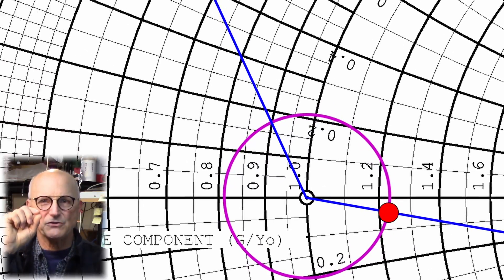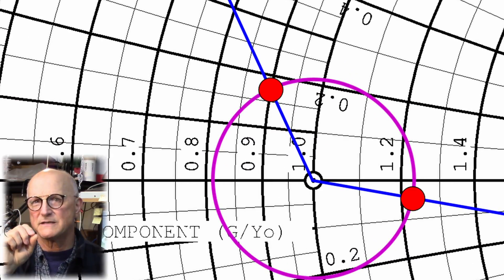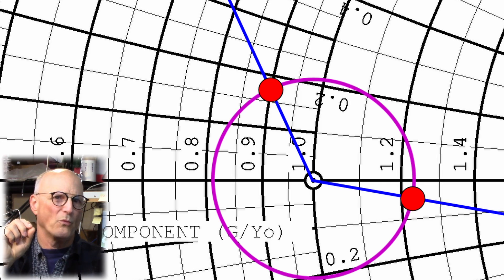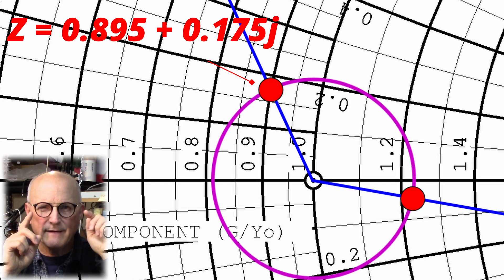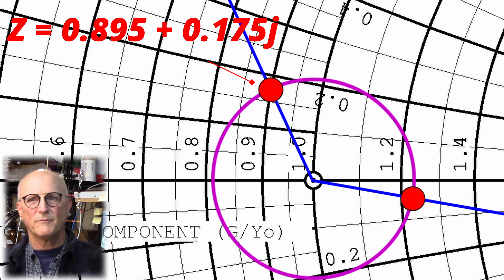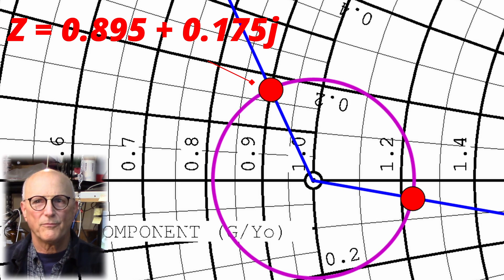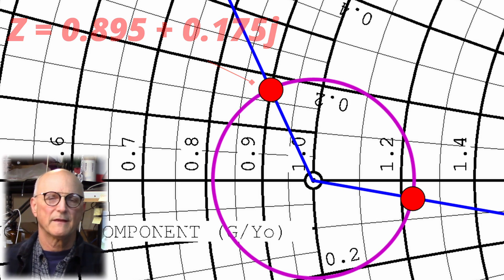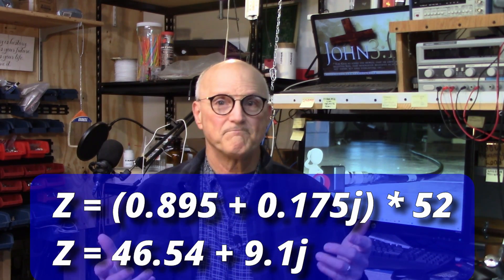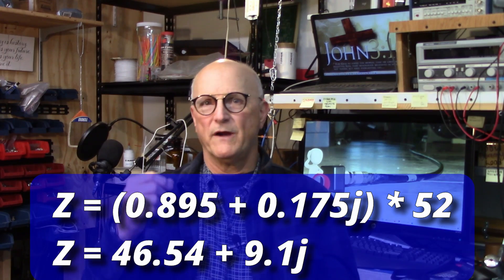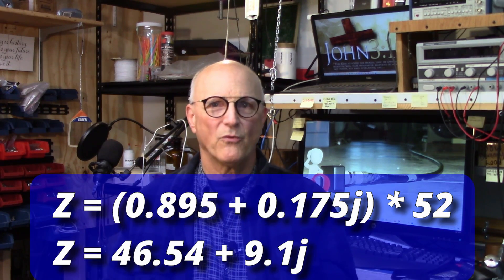We note the spot where this newly drawn line crosses the SWR circle and determine what impedance it represents. Using my calibrated eyeball, I get a normalized impedance of 0.895 + 0.175j. We then unnormalize by multiplying by the system impedance of 52 ohms, which gives us 46.54 + 9.1j.